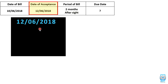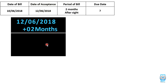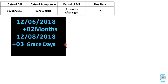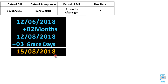So we write 12th June 2018, and we add the period of 2 months, which gives 12th August 2018. Then we add 3 grace days, so the answer comes to 15th August 2018.